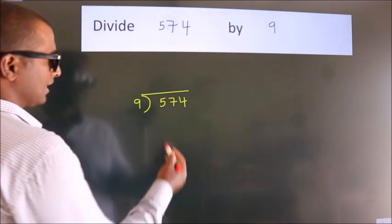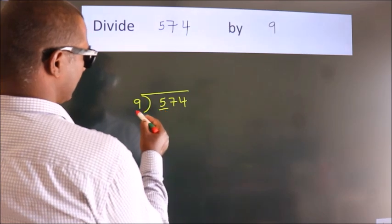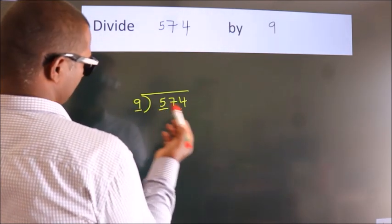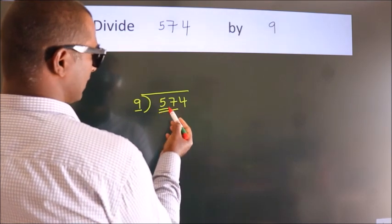Next, here we have 5, here 9. 5 smaller than 9. So we should take two numbers, 57.